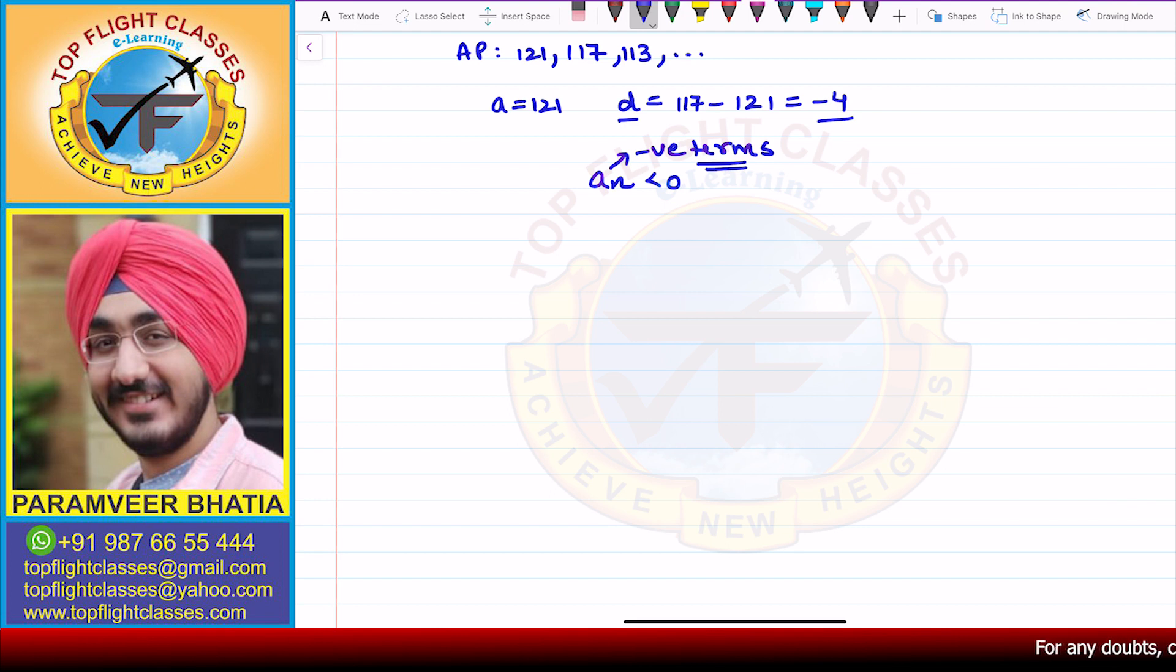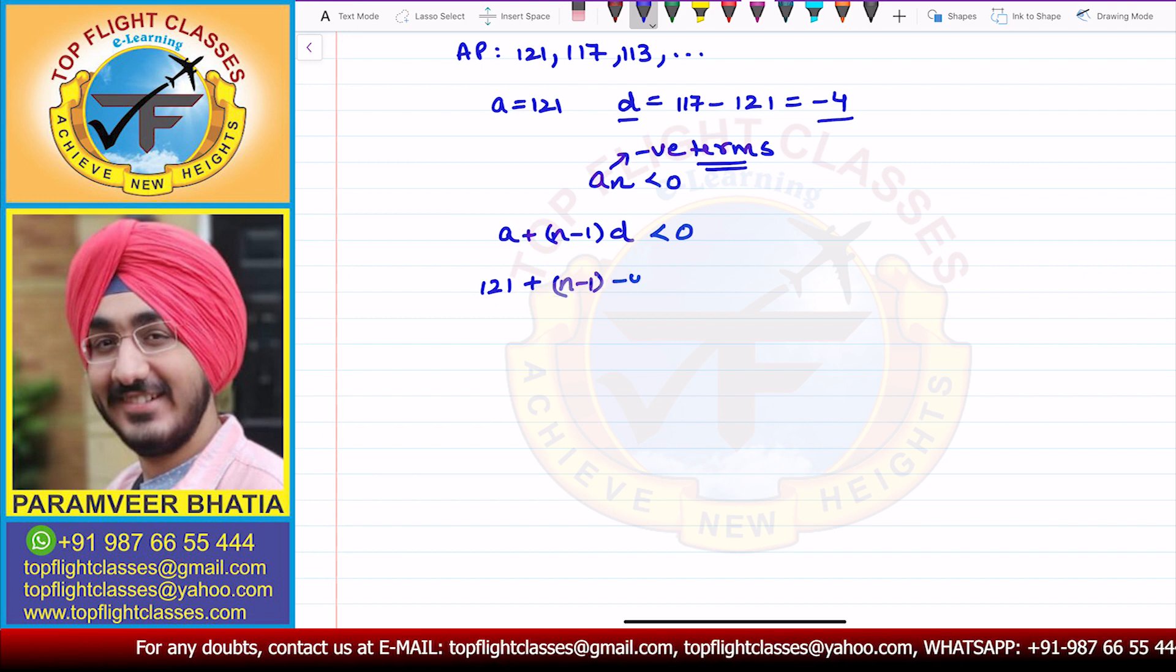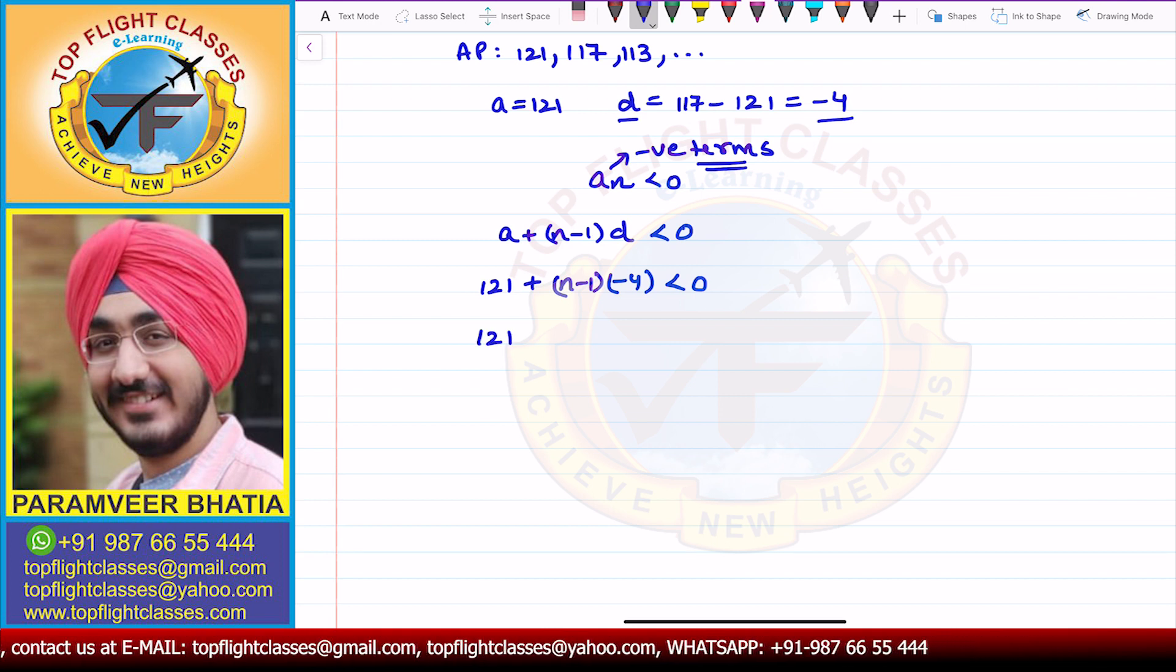So AN is representing negative terms in this case, and negative terms are less than 0. So from here, if we open the formula, I will get that A plus N minus 1 times D is less than 0. Now A value in this case is 121 plus N minus 1 times D is minus 4. This is less than 0.